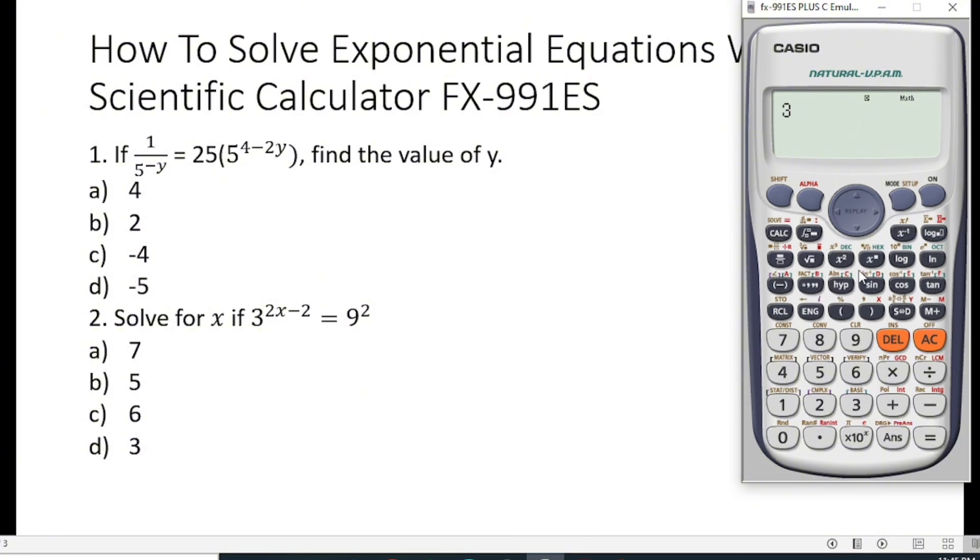So 3 raised to the power 2x minus 2 equals 9 squared.